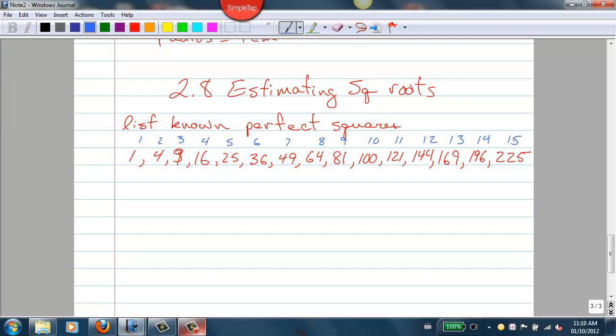And that list of known perfect squares, you should be comfortable with all the way up to 15 squared, which is equal to 225. But what happens if we're looking for the square root of a number that's not in that list of perfect squares?